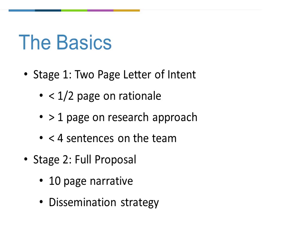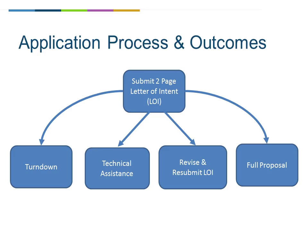After you submit a letter of intent, there are a number of possible outcomes. You may receive a turndown, be asked to submit a full proposal, be asked to revise and resubmit your letter of intent, or be invited to one of our technical assistance services. If you receive a turndown, we do not provide unsolicited feedback, but you may call or email the program office for more details. We should be fully transparent in noting that only about 8% of letters of intent are invited on to the full proposal stage.